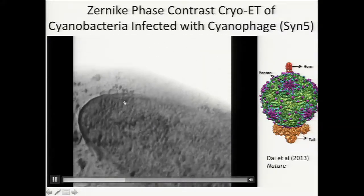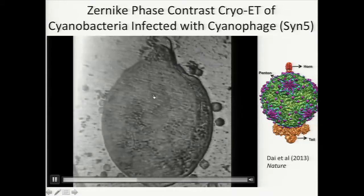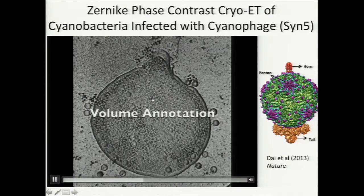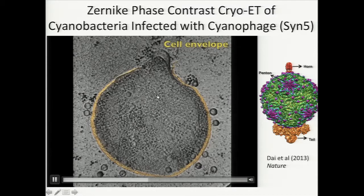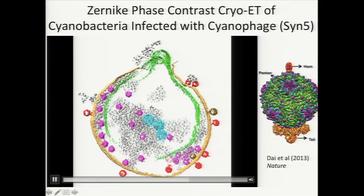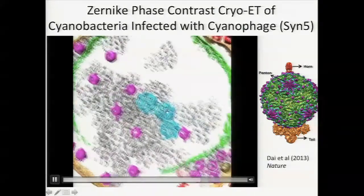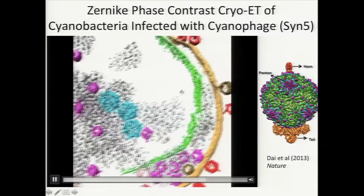I do a volume rendering to show different aspects inside the cell. These are phages infecting the cell, and looking at different angles and side views, one of the most time-consuming aspects is annotating the features in the cell. The cell envelope is shown in orange; in green is what we call thylakoid because this is a photosynthetic bacterium. There are also carboxysomes, lots of ribosomes, vesicles, infecting phage particles at the perimeters, expanded phage particles inside, and many other particles in purple inside — resulting in a completely annotated tomogram.